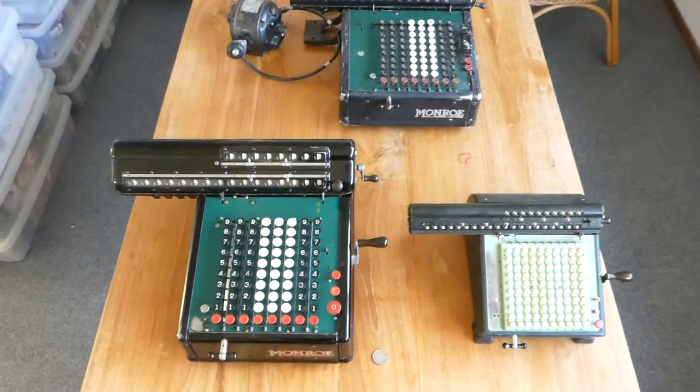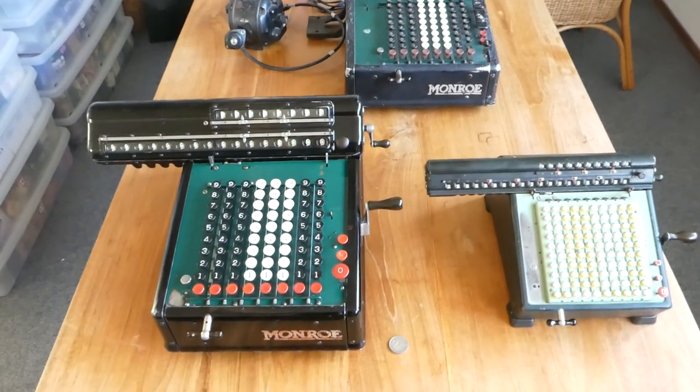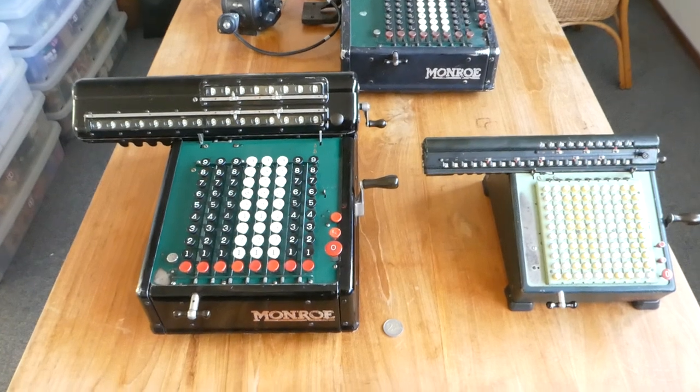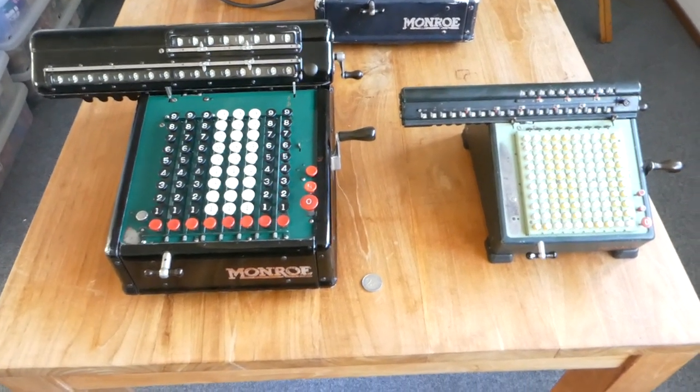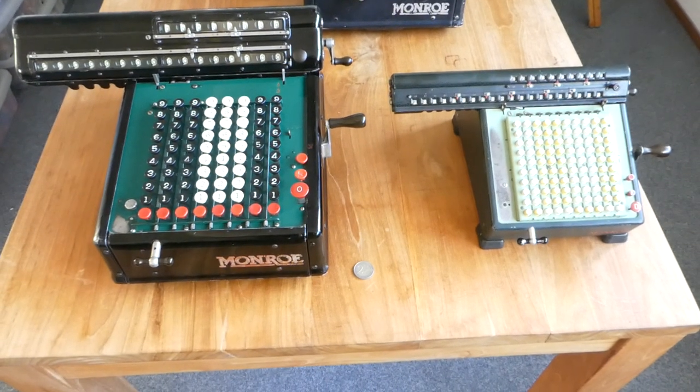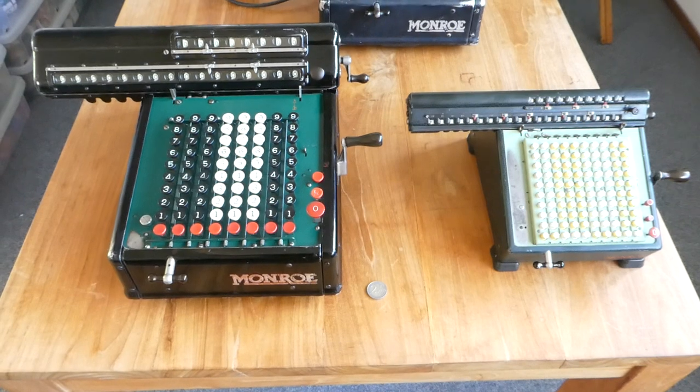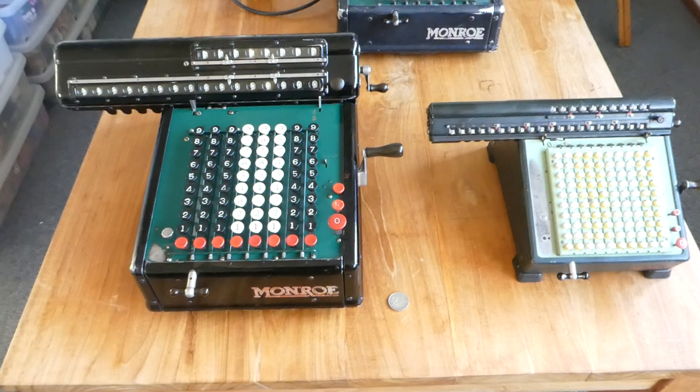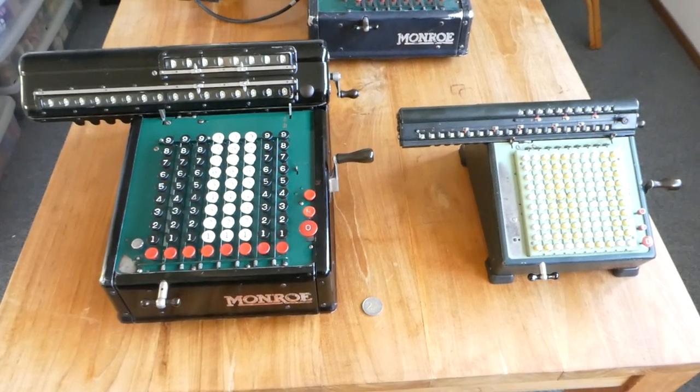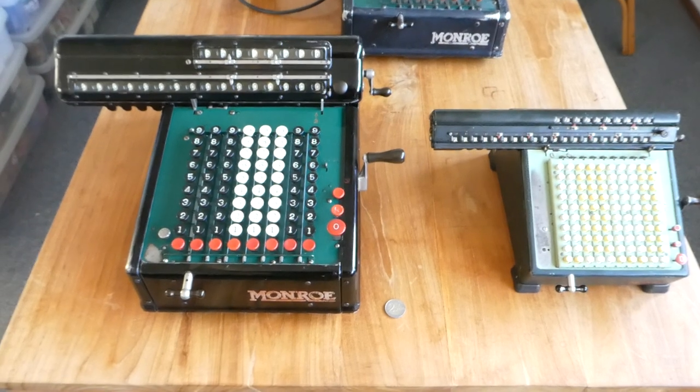Here are three Monroe calculators. The Monroe Calculating Machine Company was founded in 1912 by J. Monroe. He took a mechanism designed by Frank Baldwin and turned it into a successful commercial machine. Frank Baldwin had invented many different mechanisms in his life, but none of them were commercially successful until J. Monroe came knocking on his door.